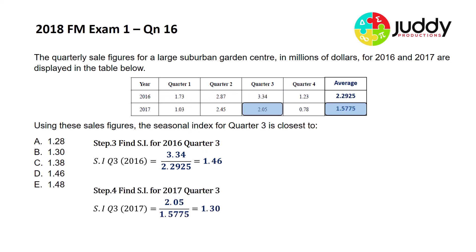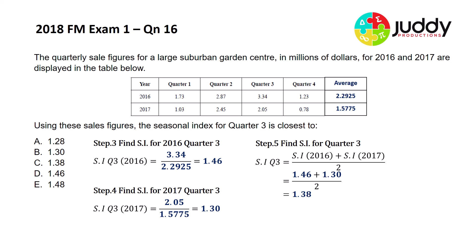Repeating the same for 2017 quarter three: we use the value of 2.05 divided by the average of 1.575, giving a seasonal index of 1.30. The question asks for the overall seasonal index for quarter three, covering both 2016 and 2017. We simply average the two values: 1.46 plus 1.30, divided by two, gives an overall quarter three seasonal index of 1.38, which is option C.